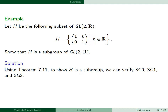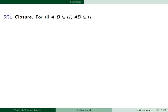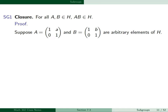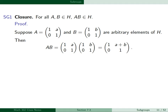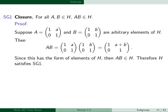We want to show H is a subgroup of GL2R. Using Theorem 7.11, we verify SG0, SG1, and SG2. H is clearly non-empty, so satisfies SG0. For SG1, suppose A = [1, a; 0, 1] and B = [1, b; 0, 1] are arbitrary elements of H. The product AB is the matrix [1, a+b; 0, 1]. Since this has the form of elements of H — 1s on the diagonal, 0 in the lower left, a real number upper right — the product AB belongs to H. Therefore H satisfies SG1.